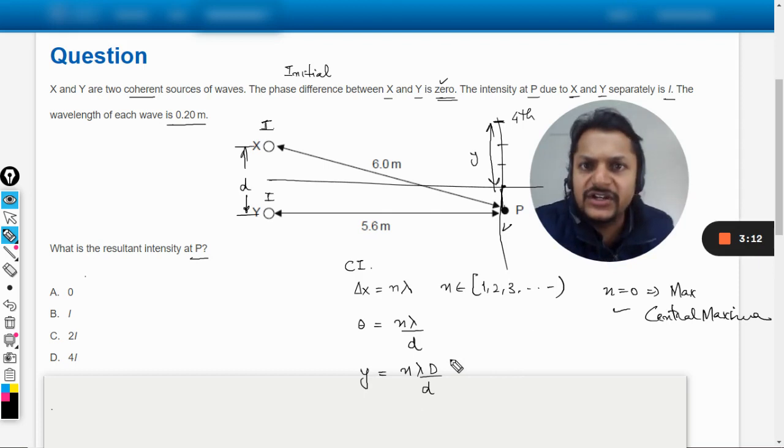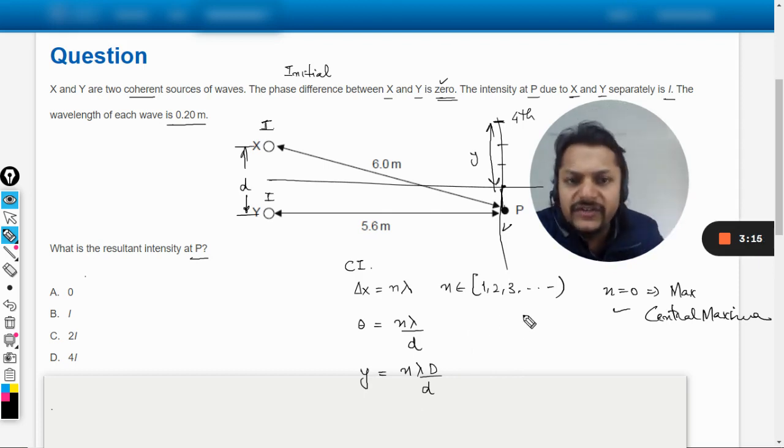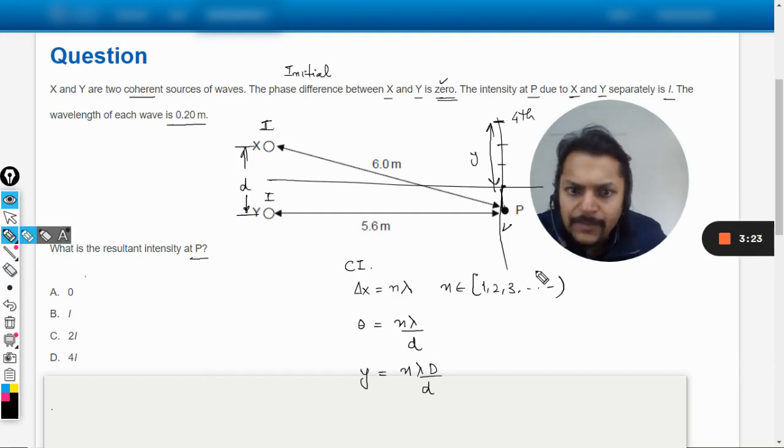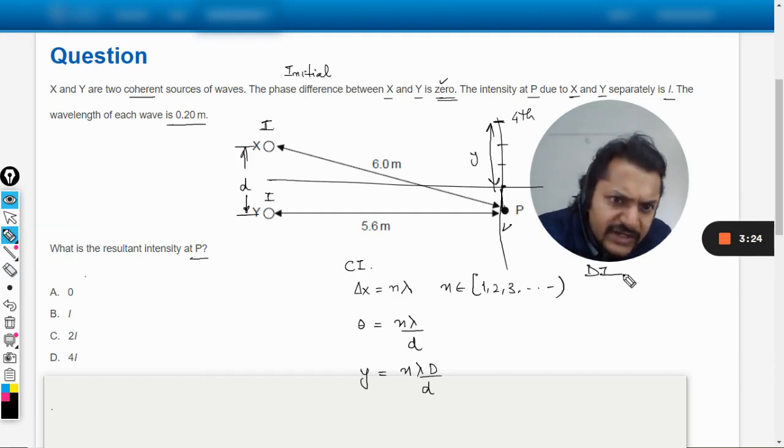Now let us talk about destructive interference. For destructive interference, the delta X comes out to be equal to (n - 1/2) λ, where n is again 1, 2, 3. Theta is given by (n - 1/2) λ divided by small d.